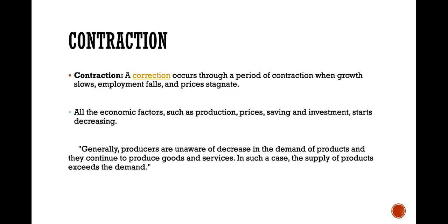Contraction is the correction that occurs through a period when the growth slows down. You begin to have a lot of employment falls — that's unemployment — and then prices become stagnant. When people don't have jobs, they are not able to purchase stuff. Generally, producers are unaware of the decrease in demand of products and they continue to produce, such that supply of goods exceeds demand.